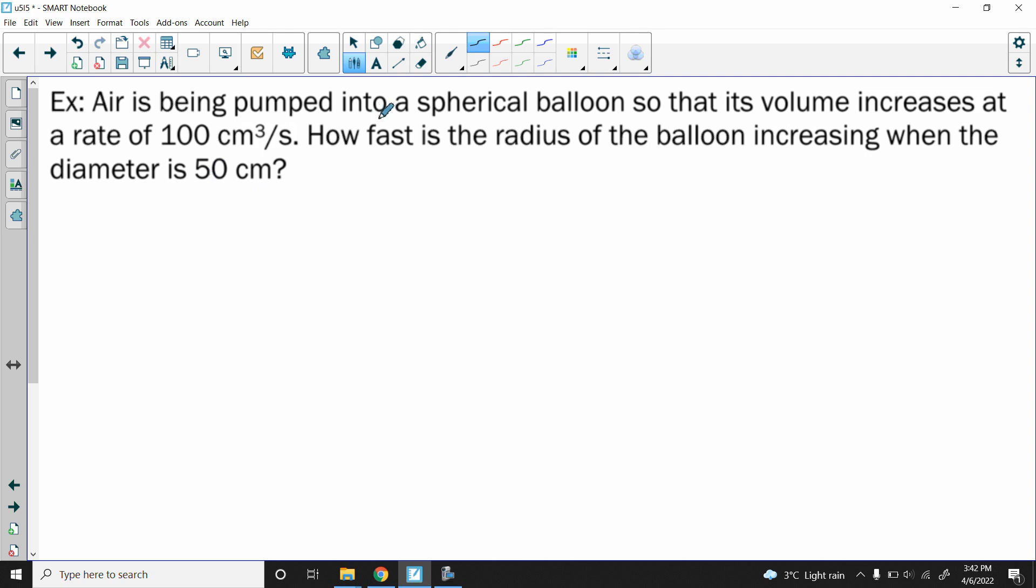Let me read the question. It says air is being pumped into a spherical balloon so that its volume increases at a rate of 100 cubic centimeters per second. How fast is the radius of the balloon increasing when the diameter is 50? First of all, we have a sphere and the volume of the sphere is four over three pi r cubed. You might be given it if it was an assessment.